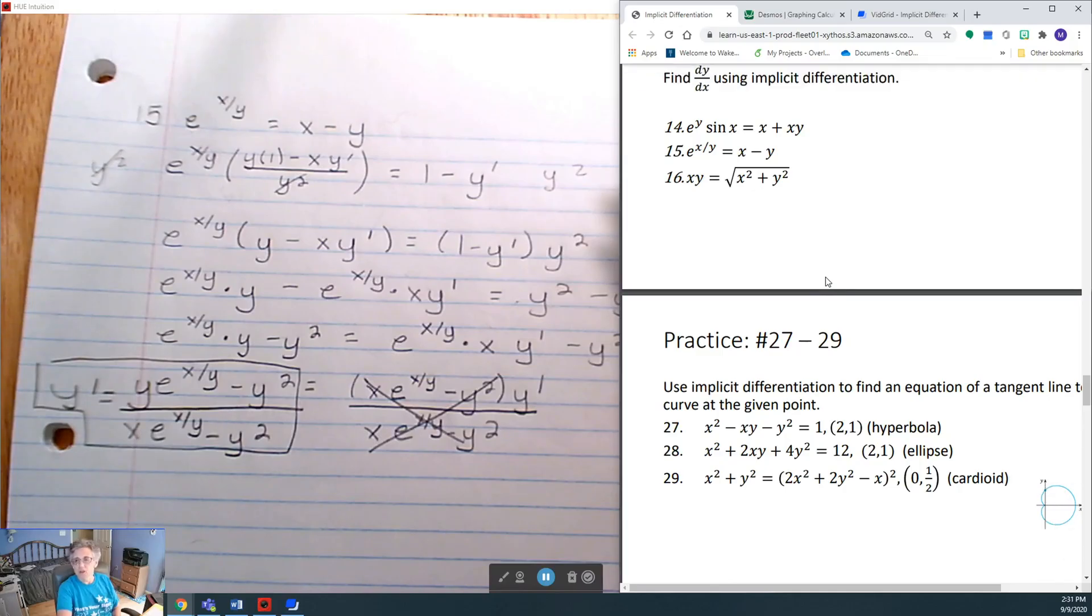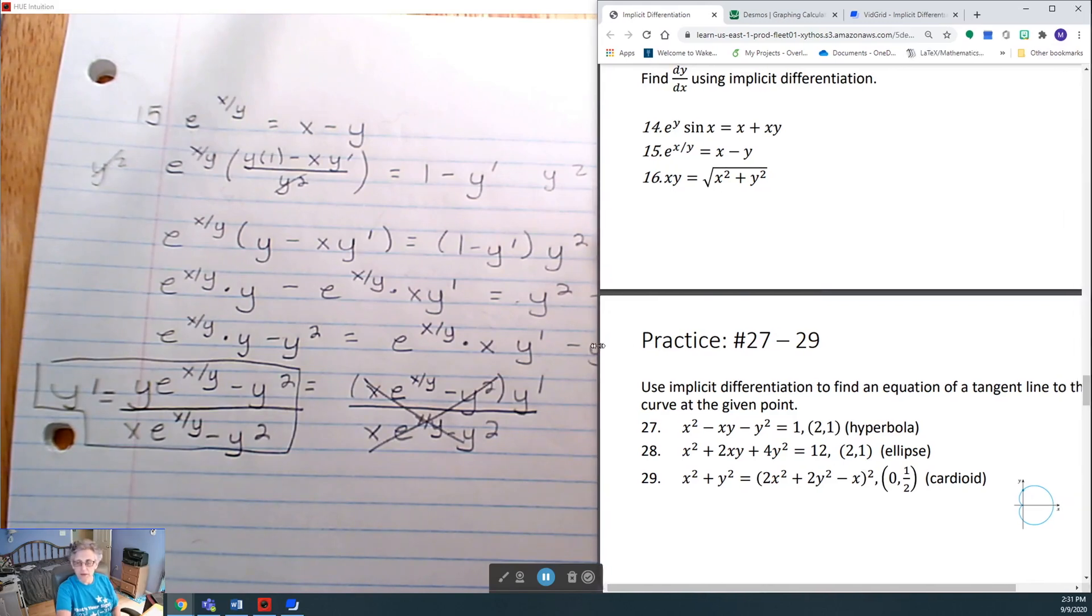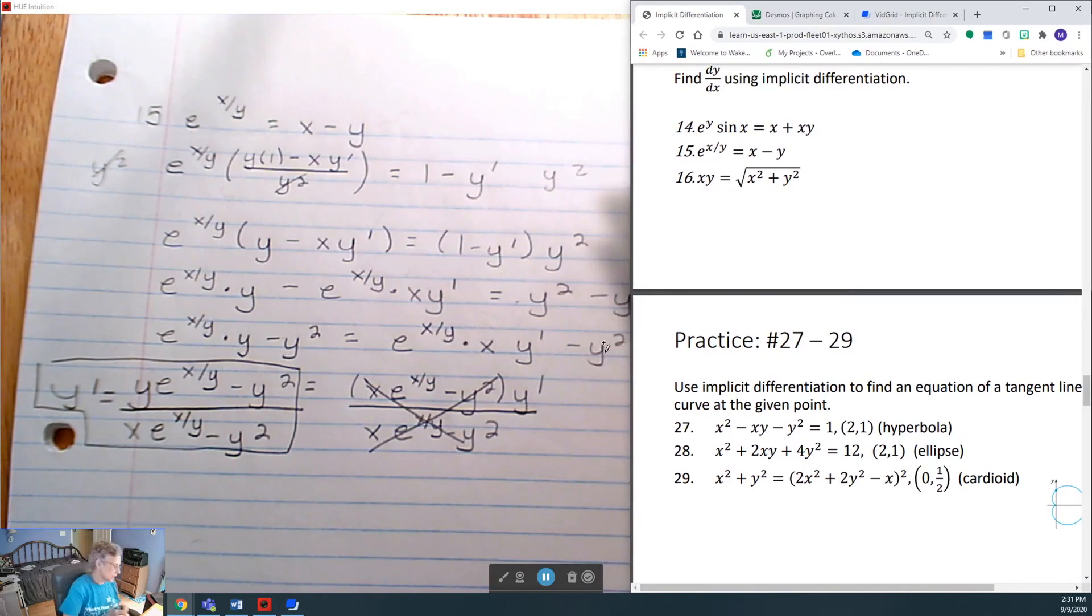I'm going to leave 27 and 28 for you to do. I'll do number 29 because it has a little bit of a different thing there. It has a chain rule that we have to deal with. So I'll do number 29.